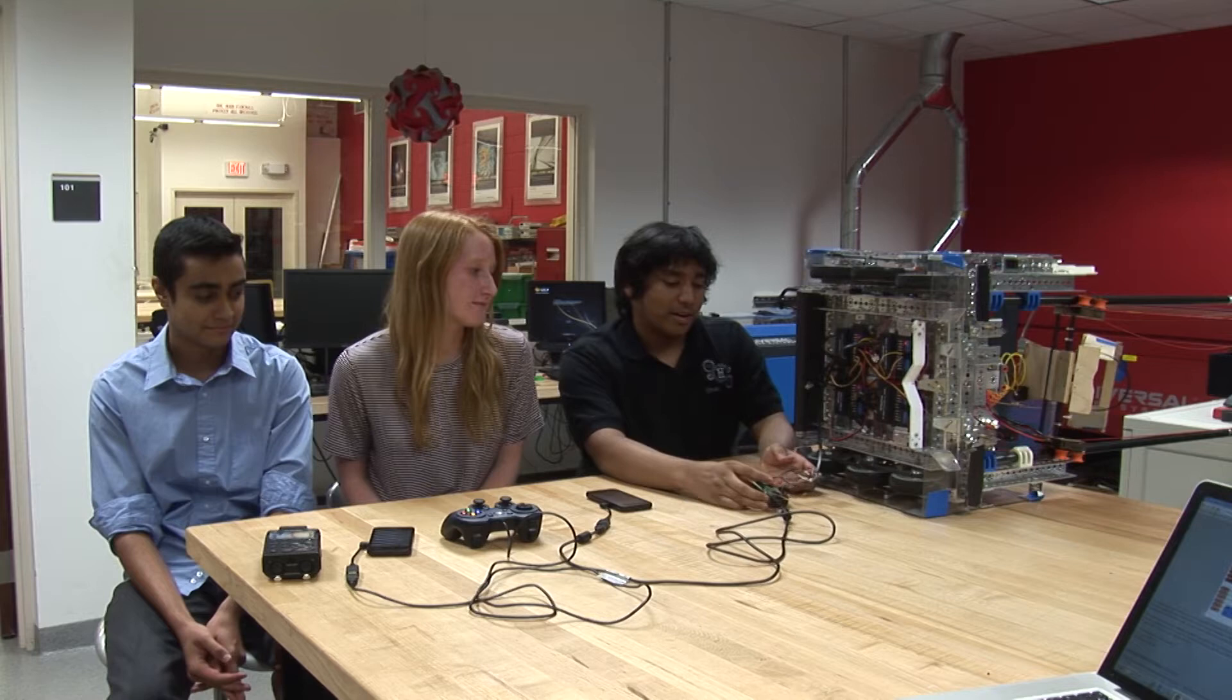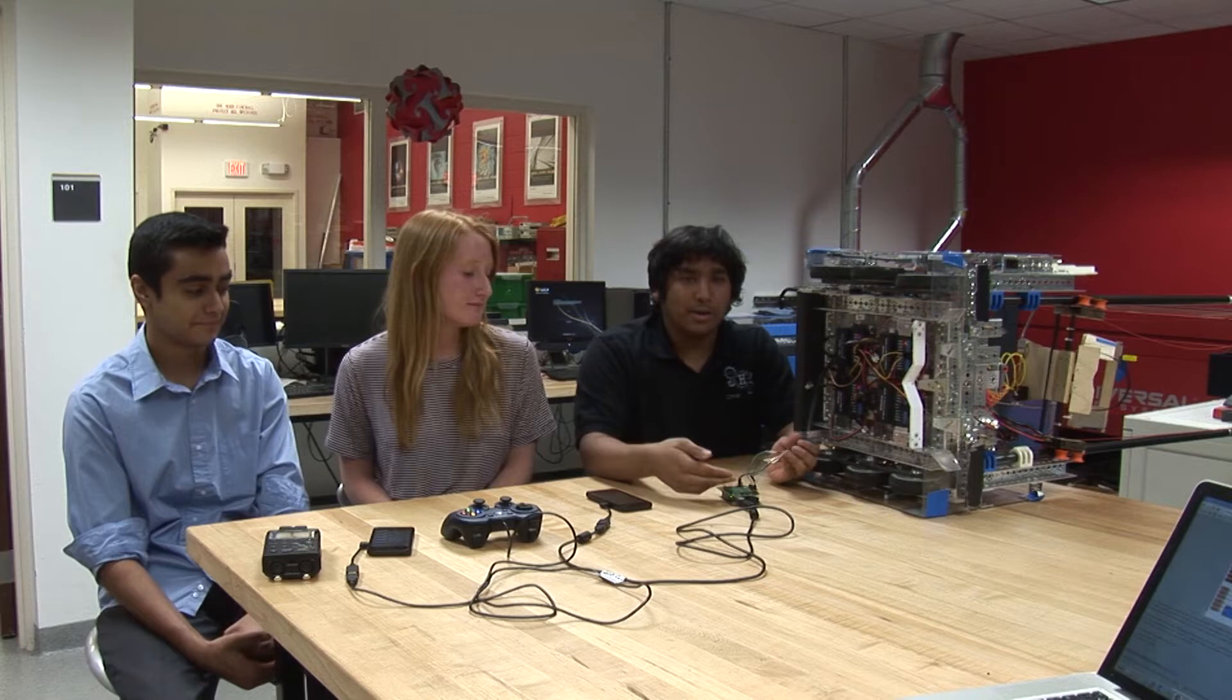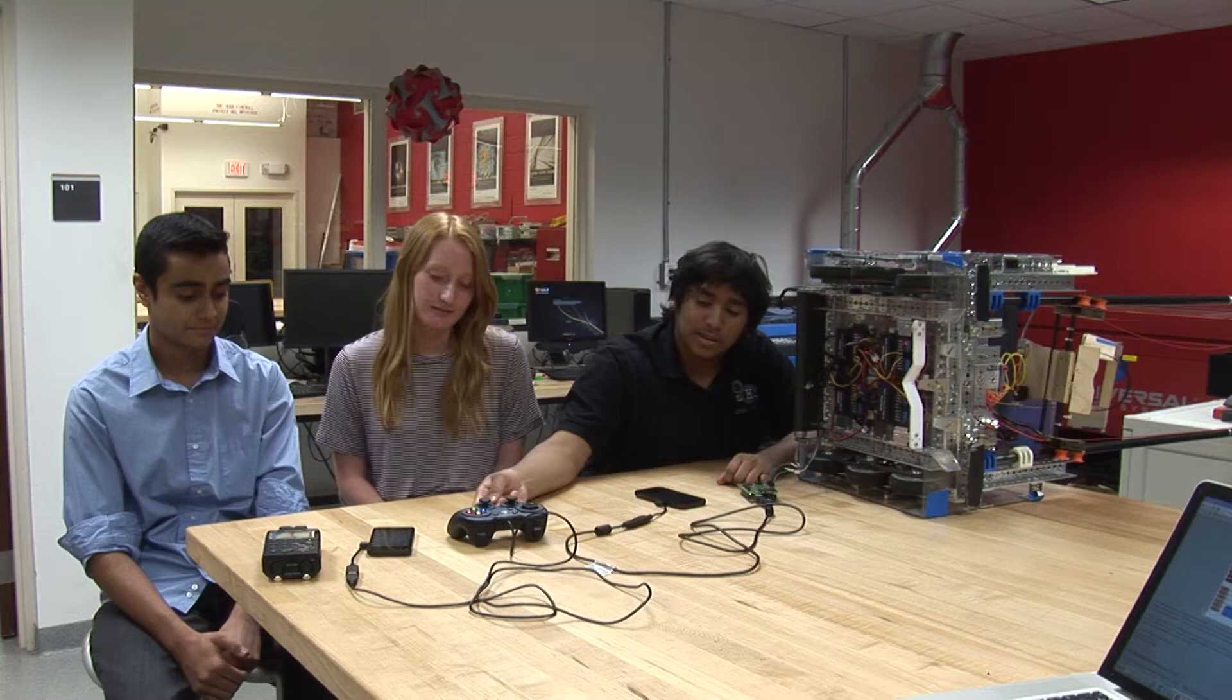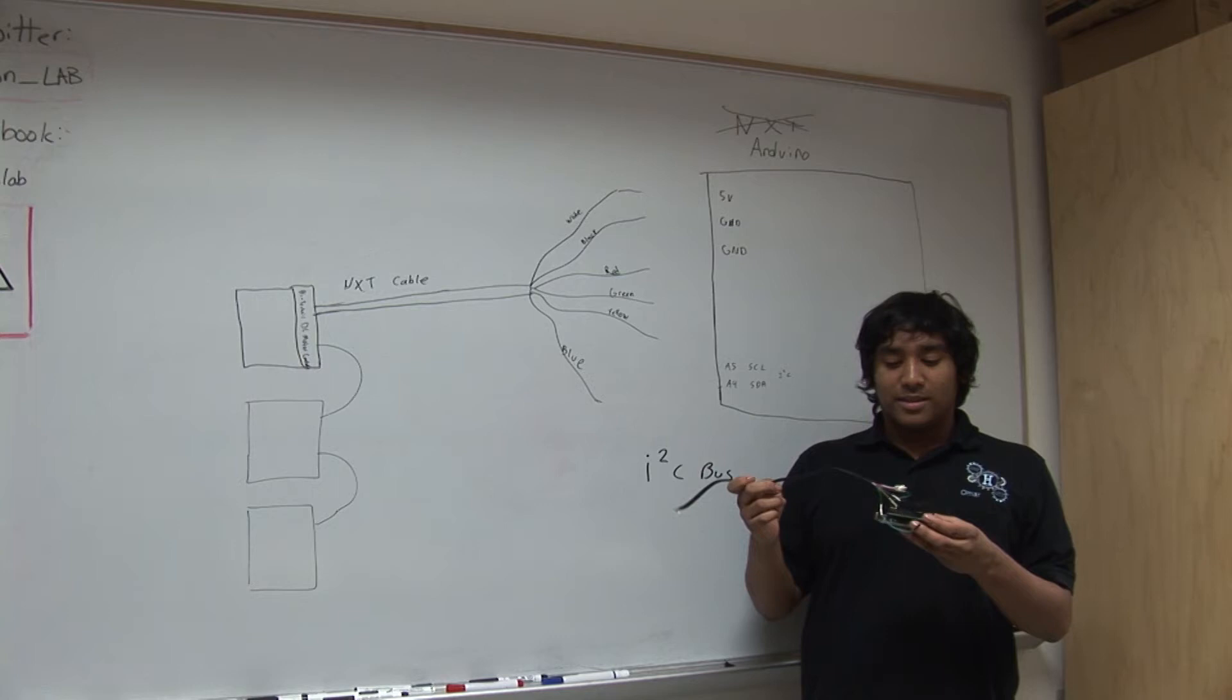Right here we have our setup. We have the Arduino Uno connected to the High Technic motor controller through an NXT cable, and our robot controller station connected to the Arduino through an OTG cable. We have our driver control station connected to the joystick through the OTG cable as well.